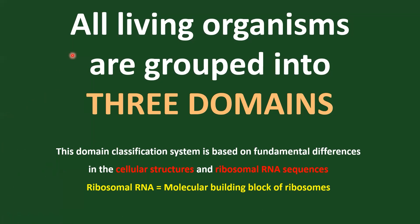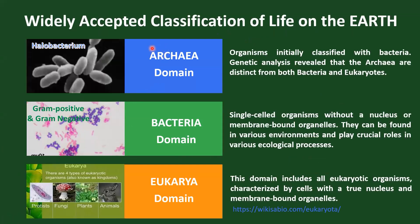If we talk about the diversity of life, biologists classify living organisms into three domains. This domain classification system is based on fundamental differences in cellular structures and ribosomal RNA sequences. These domains are: one, the Archaea domain; two, the Bacteria domain; and three, the Eukarya. Carl Woese and his colleagues proposed this three-domain system based on molecular and genetic characteristics of living organisms in the late 20th century.